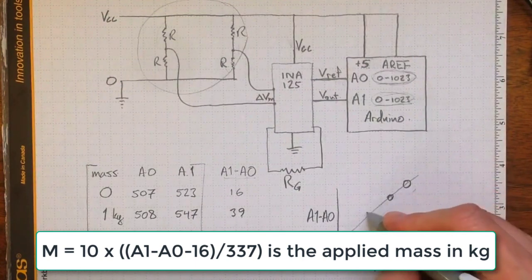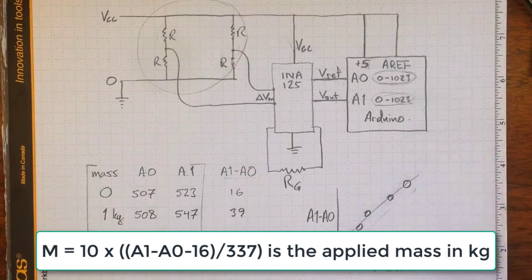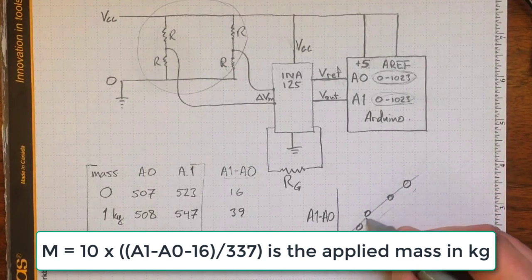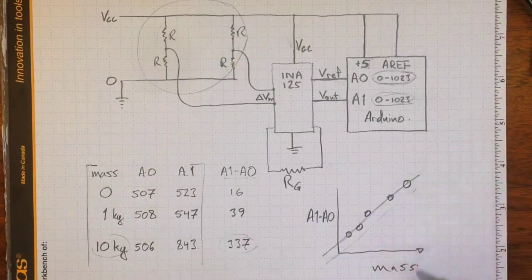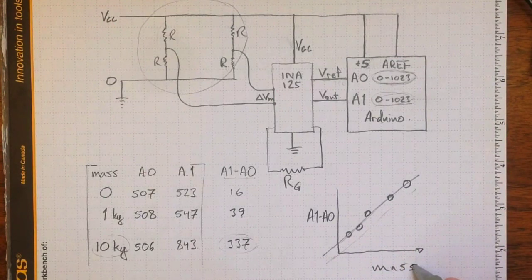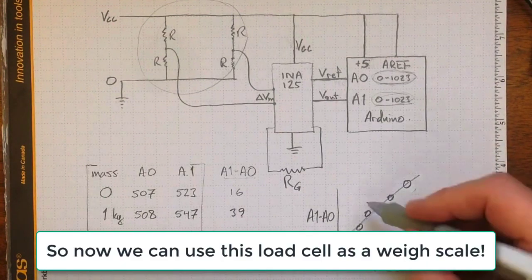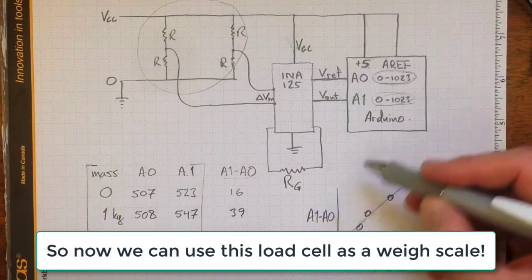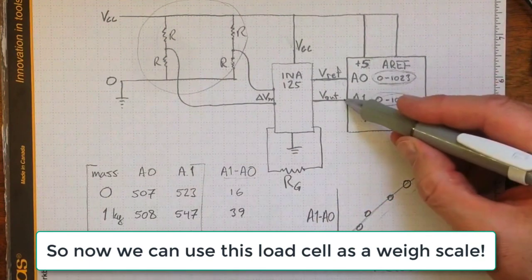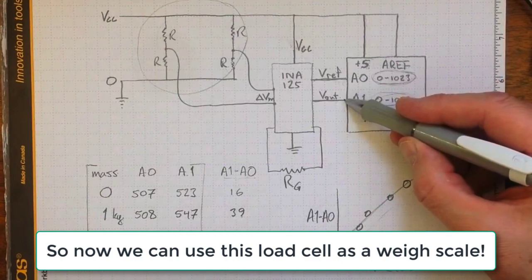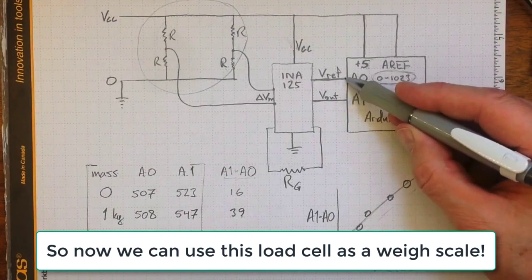And if I take some more data points in between, I should be able to come up with a calibration relationship that allows me to measure the mass, or the force applied to our cantilever beam load cell in comparison to the analog values measured here, the difference between the amplifier output and the reference voltage.